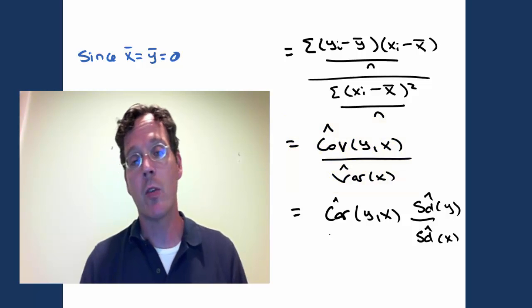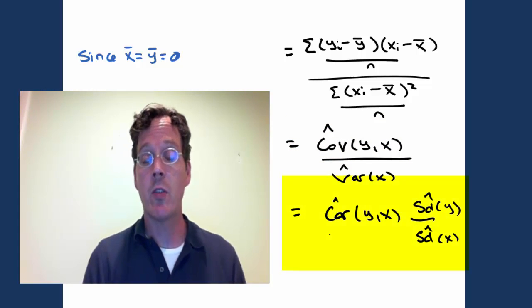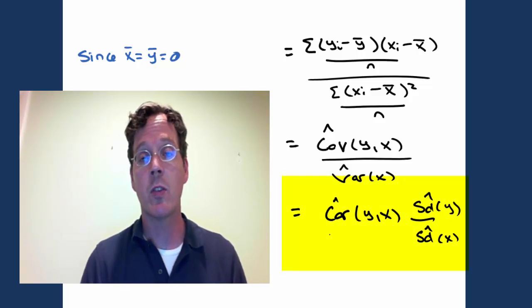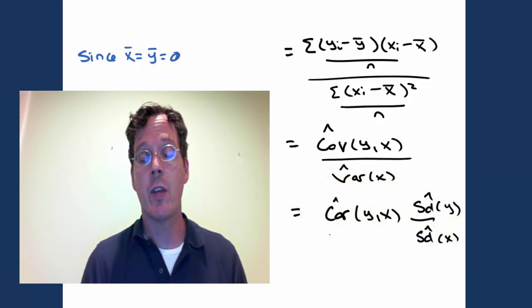We can tinker around with this formula just a little bit to find out that it's the correlation, the estimated correlation between y and x, times the standard deviation of y divided by the standard deviation of x.